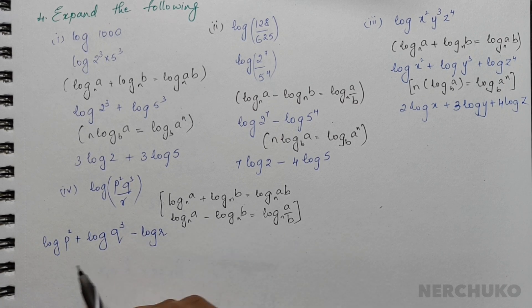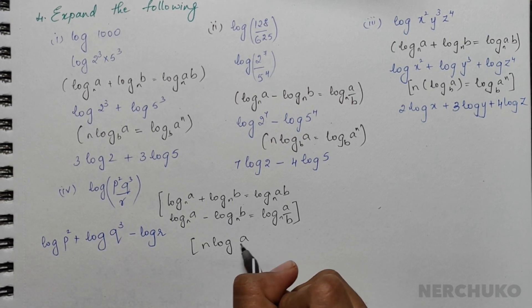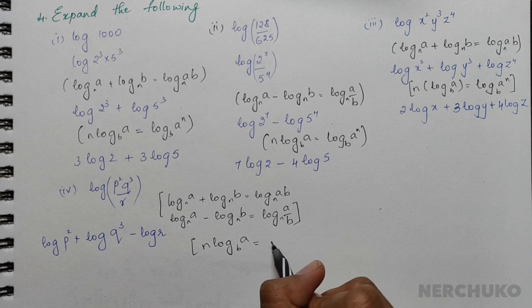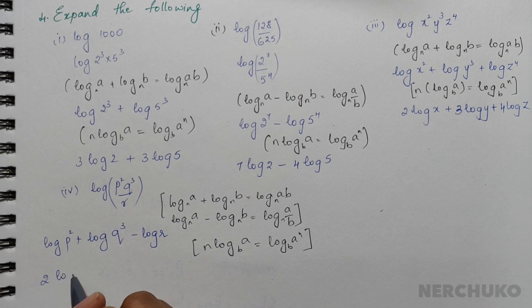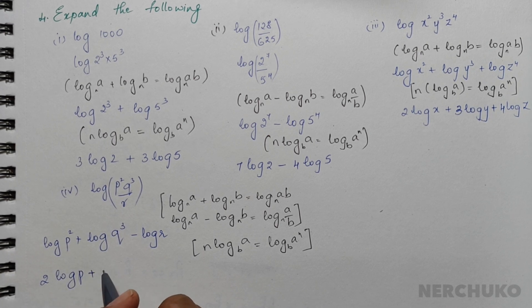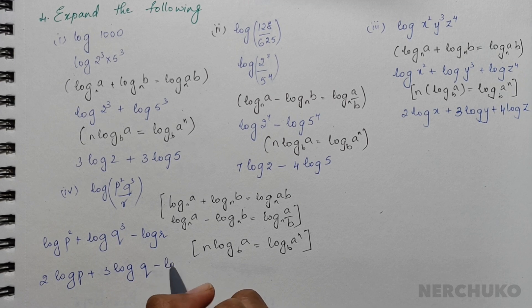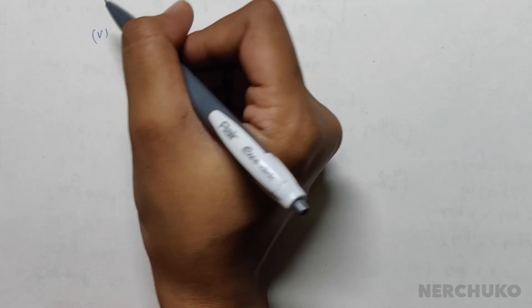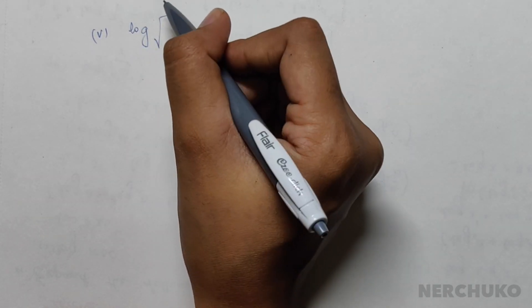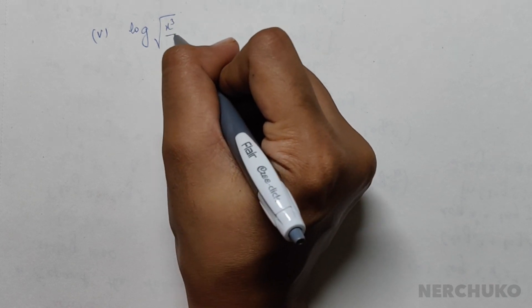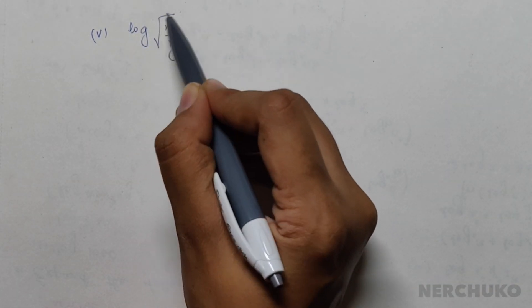Now applying the formula n·log a = log(aⁿ), I would have 2·log p plus 3·log q minus log r.